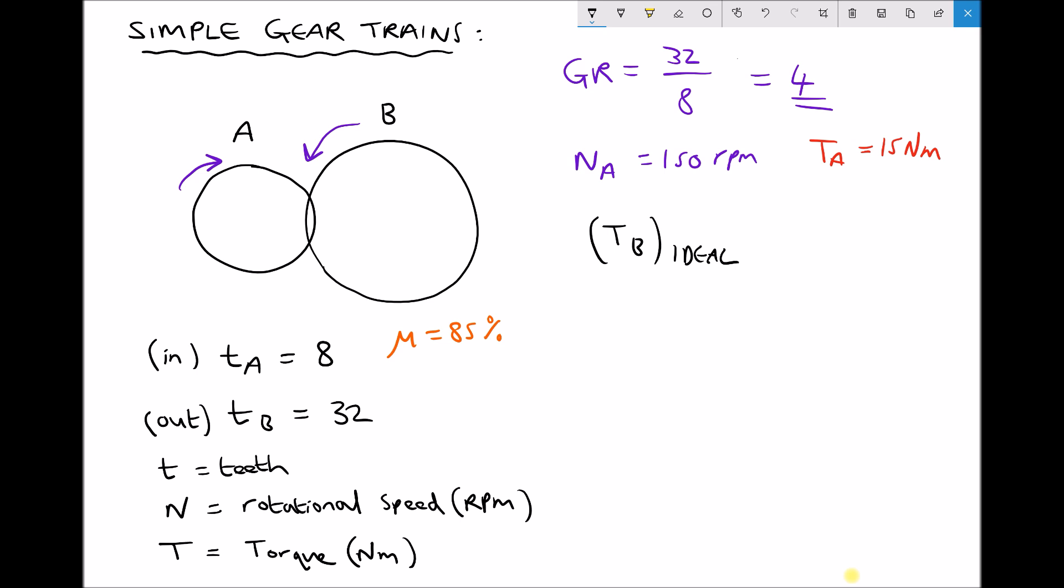Well if we want to find the actual output torque, what we can do is multiply that ideal torque, which we found to be 60 Nm, by the efficiency.